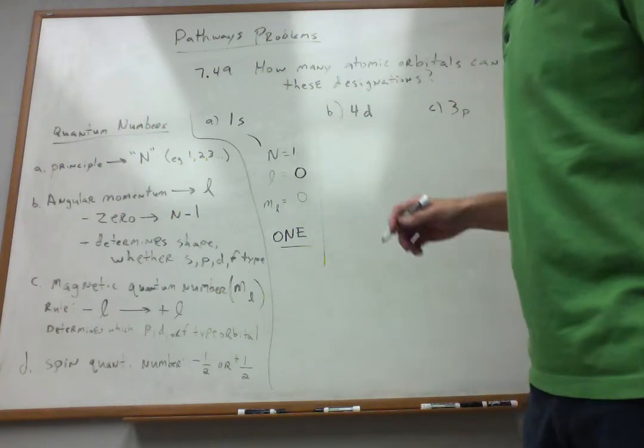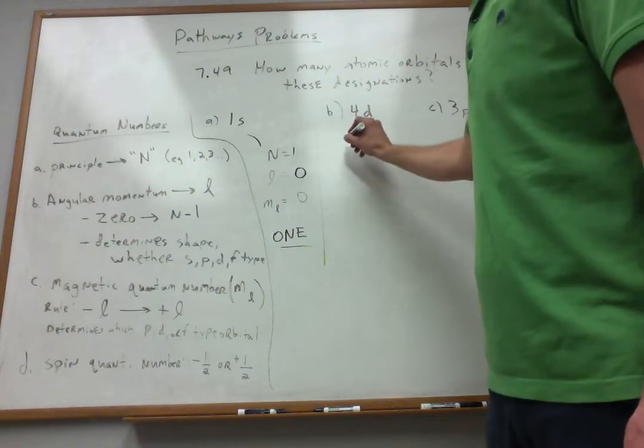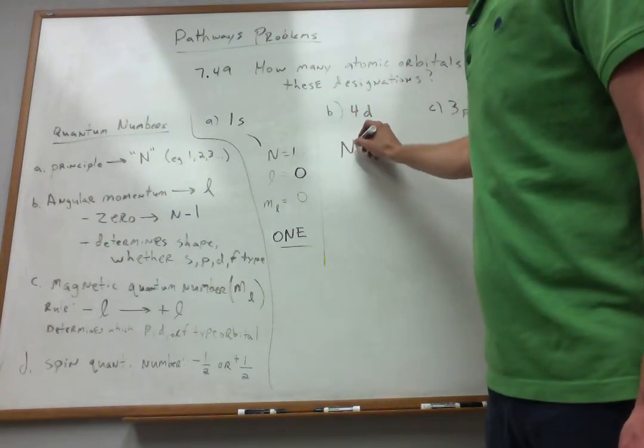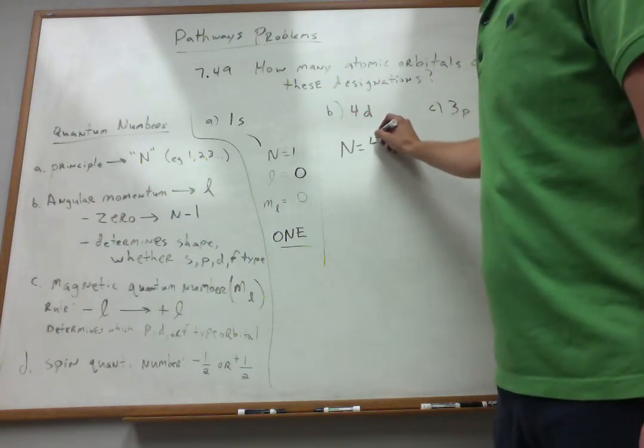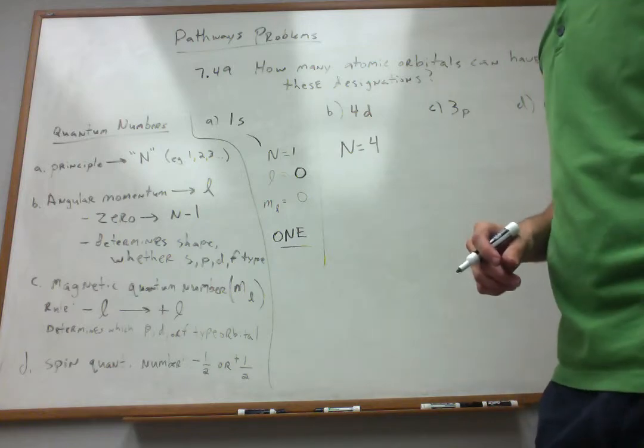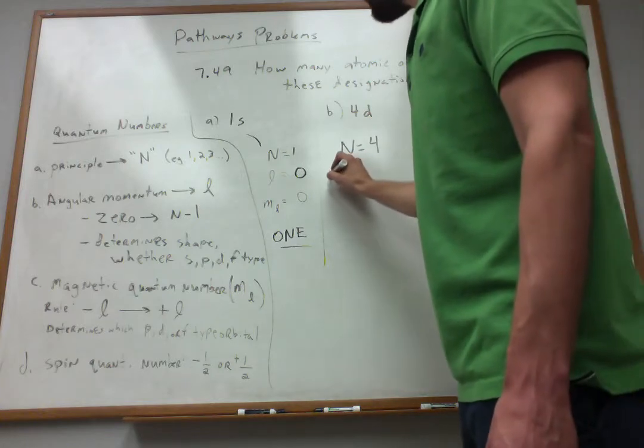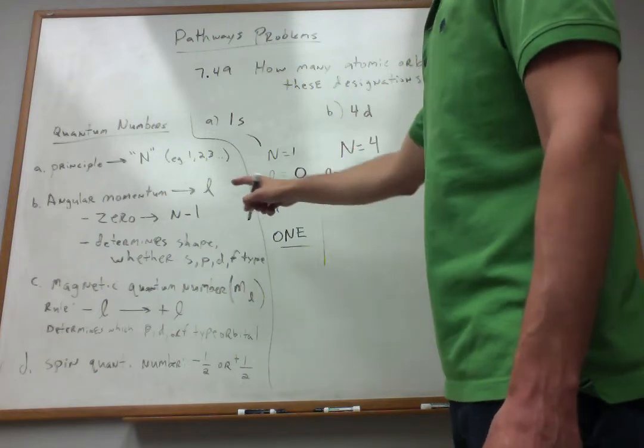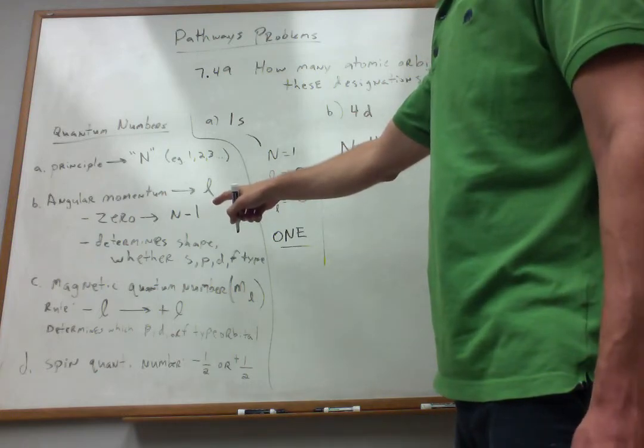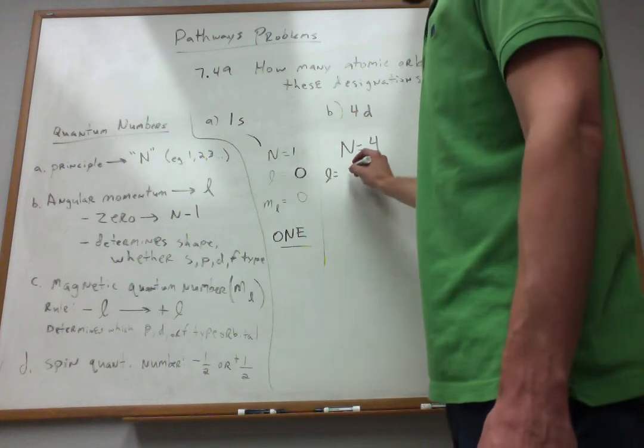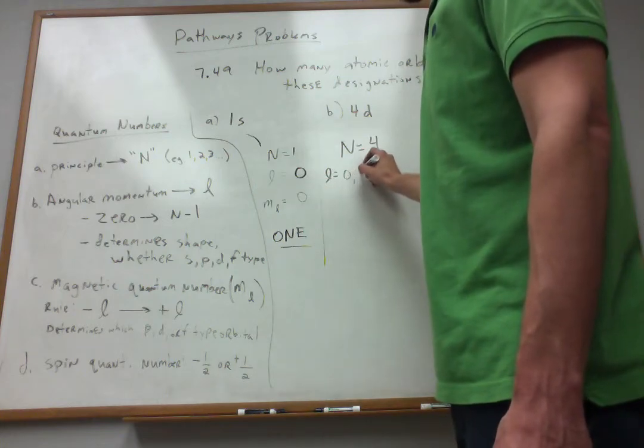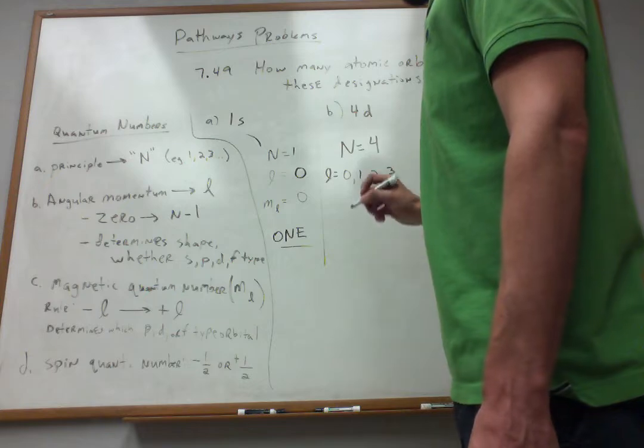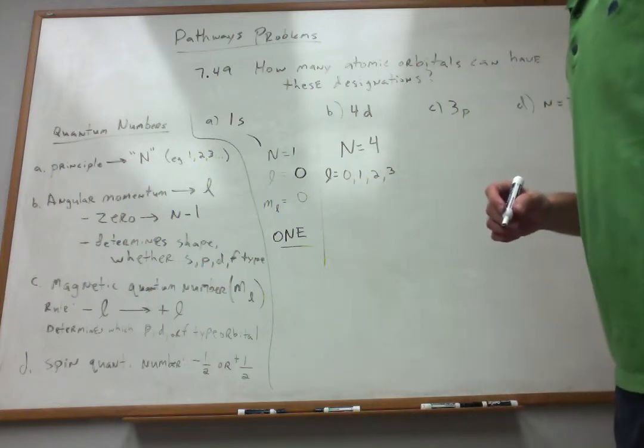Now, what about 4d? Here, a situation is very different because n is equal to what? 4. So what are my possible values for l as a result of this? Well, what's the rule for l? I can go from 0 to n minus 1. So 0 is always a possibility. 1, 2, 3 is also a possibility.